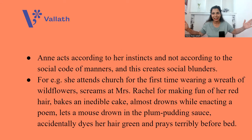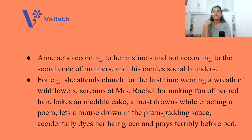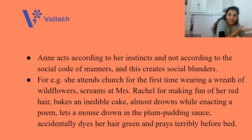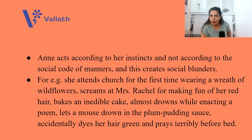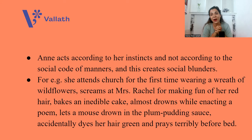There are many blunders that Anne makes. For example: she attends church for the first time wearing a wreath of wild flowers; she screams at Mrs. Rachel for making fun of her red hair; she bakes an inedible cake that nobody can eat; she almost drowns in the lake while trying to enact a poem; she lets a mouse drown in the plum pudding sauce; she accidentally dyes her hair green; and she prays terribly in bed for the first time. Marilla certainly has a lot to do to raise this child properly.